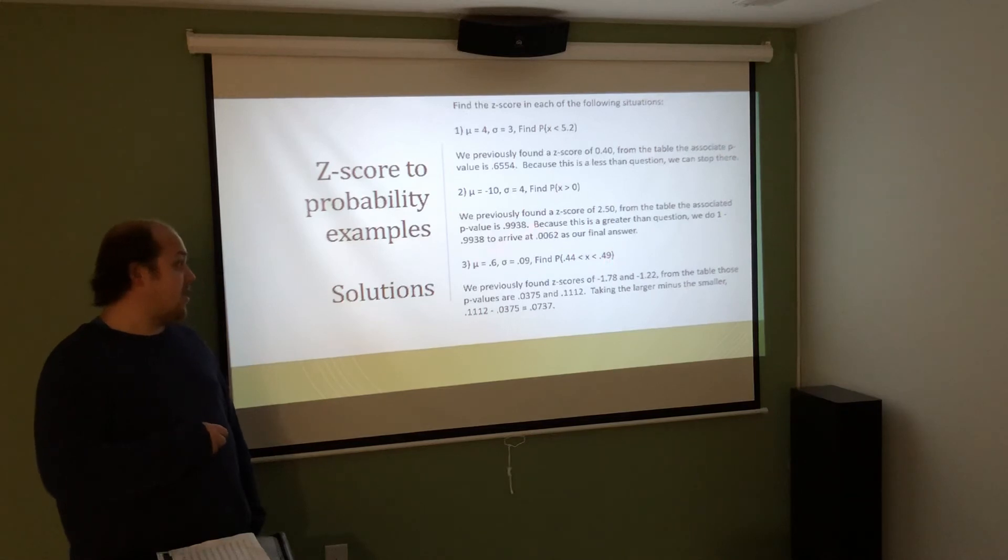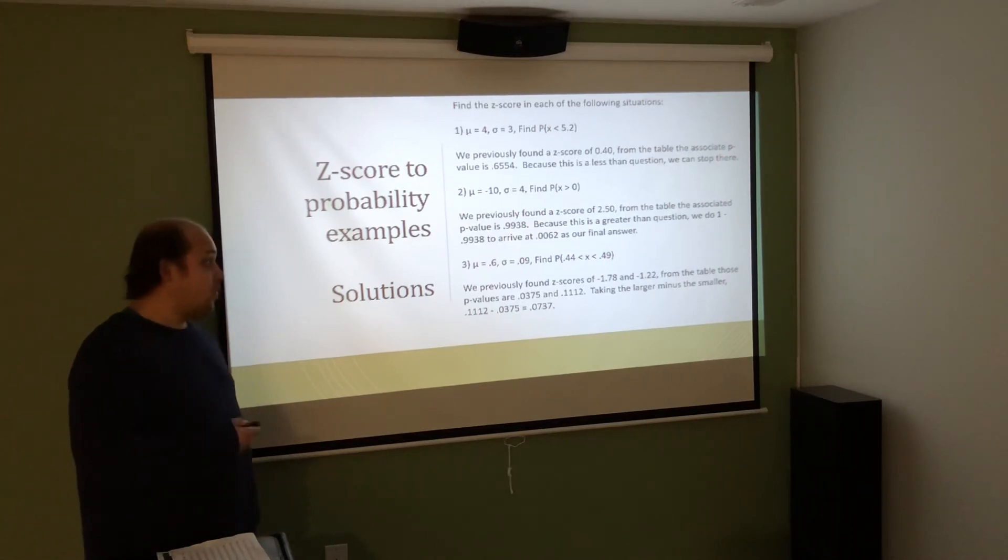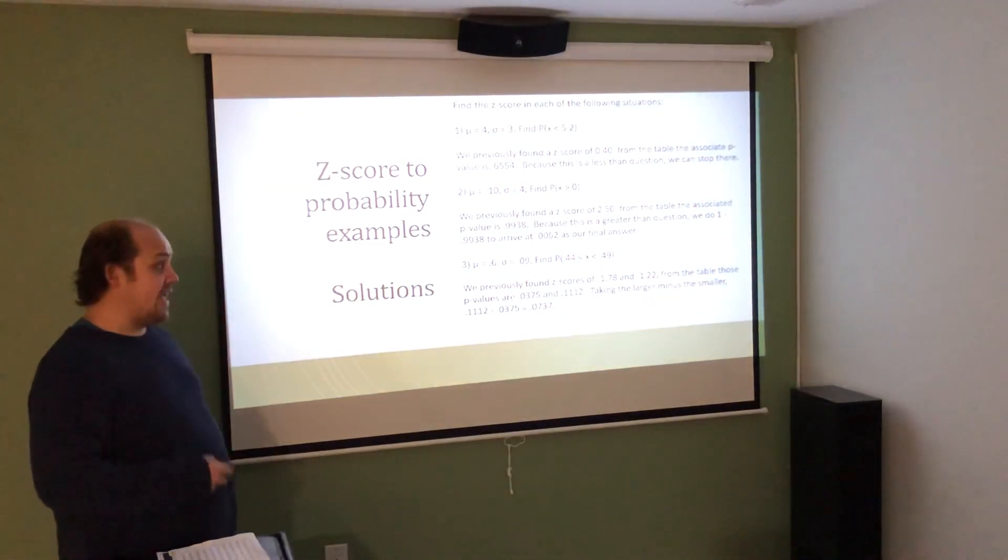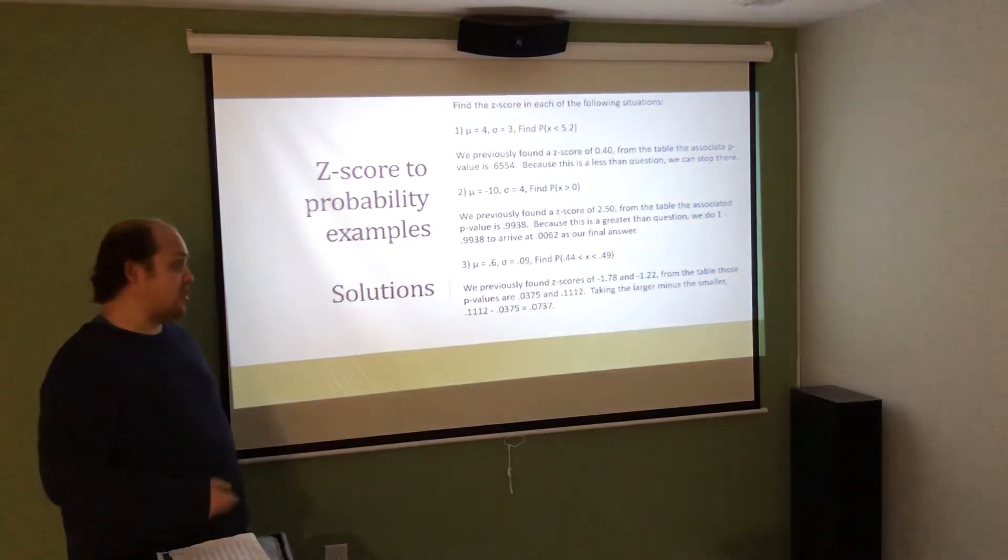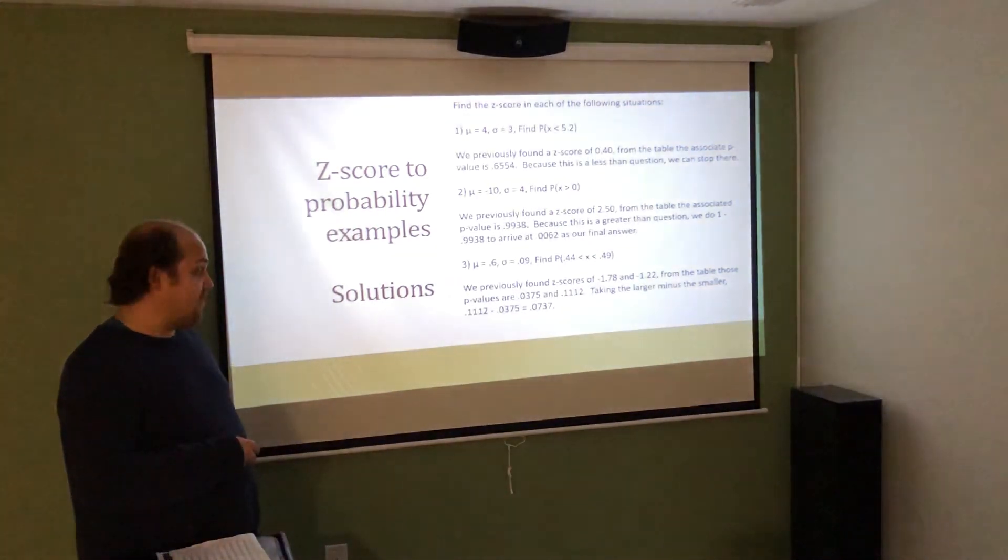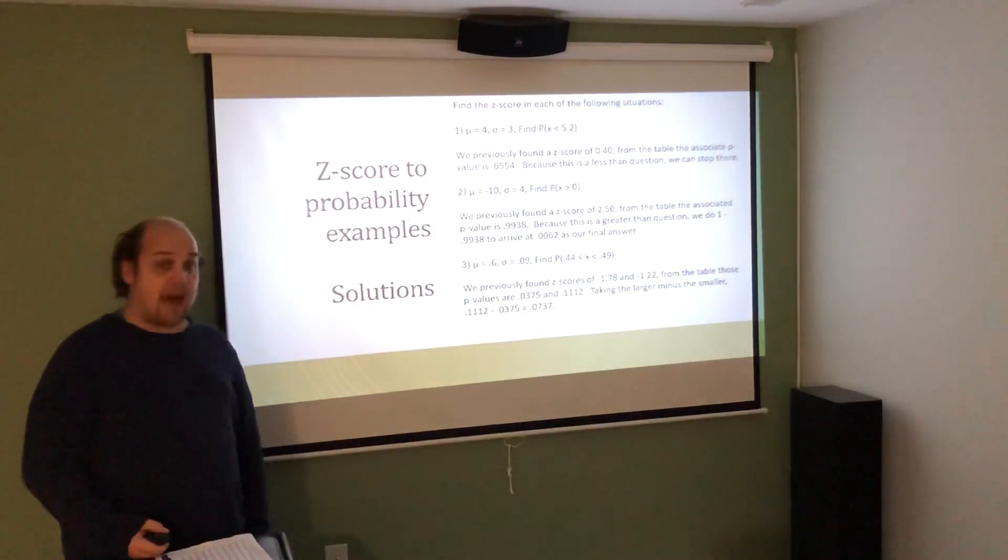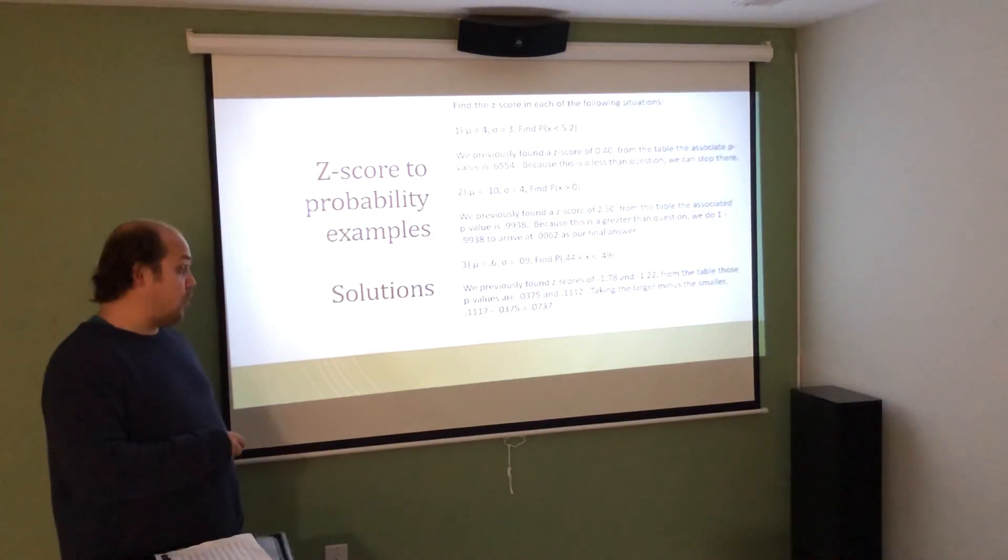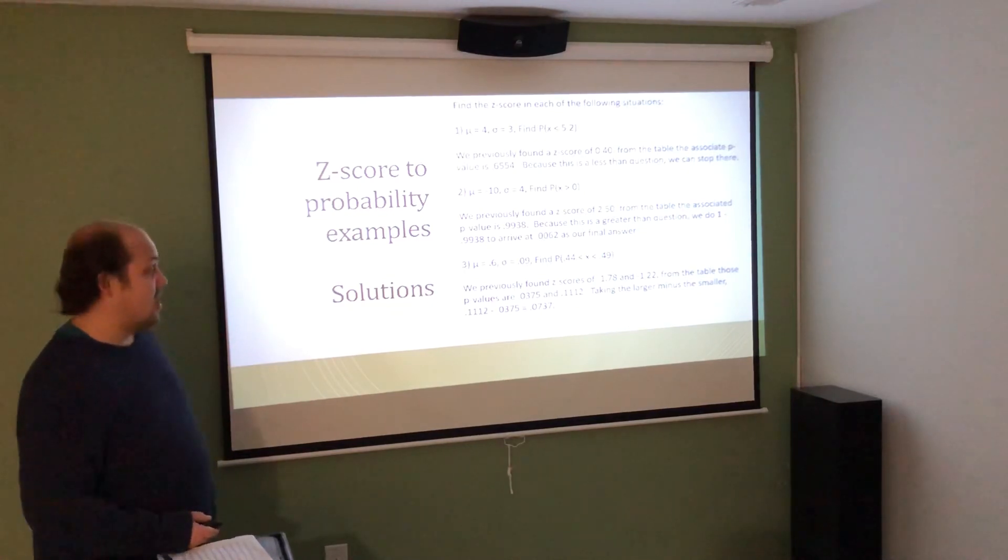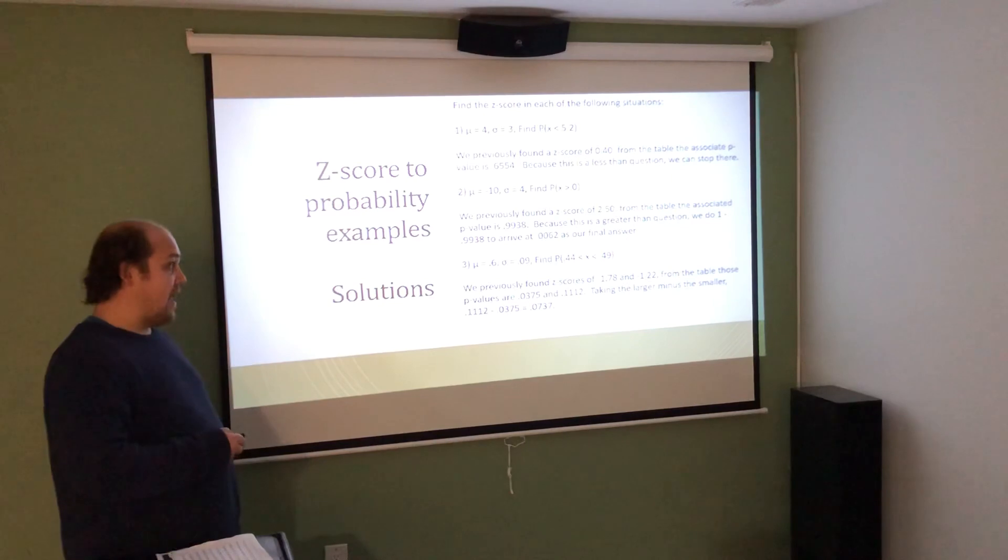For this between question, 0.44 and 0.49, both with the mean of 0.6 and standard deviation of 0.09, we found Z scores of negative 1.78 and negative 1.22. I look up those associated probabilities. Negative 1.78 points me to a P value of 0.0375. Negative 1.22 points me to a P value of 0.1112. I always take larger P value minus smaller P value. That way, I'll always get a positive probability. 0.1112 minus 0.0375 gives me a final answer of 0.0737. The probability of getting between 0.44 and 0.49, if the mean is 0.6 and the standard deviation of 0.09, is about 7.37%.